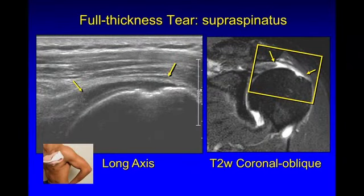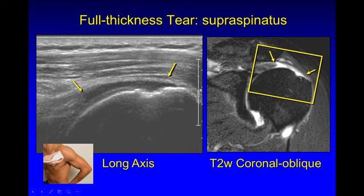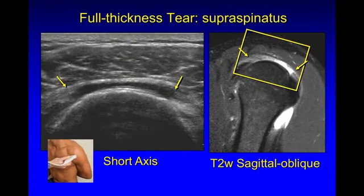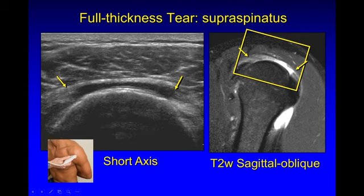As the tear gets larger in this next example, we see further retraction of the tendon from where it should be attached. There's the hyaline cartilage, the fluid-filled defect. Note the flattening as the deltoid is laying down into the torn tendon gap — yet another indirect sign of a rotator cuff tear, which is volume loss of where we expect to see the rotator cuff. On MRI, the same example and the same imaging findings. Here in short axis of that same patient, we see this is not just a full thickness tear but a full width or complete tear of the supraspinatus, where the entire tendon is torn from anterior to posterior.